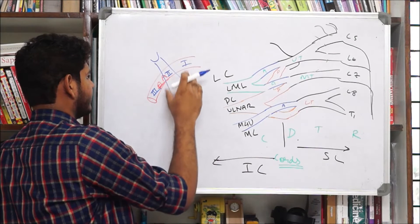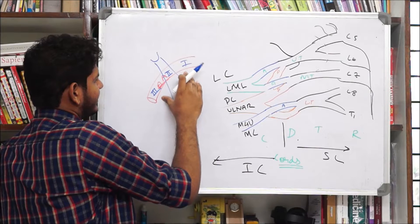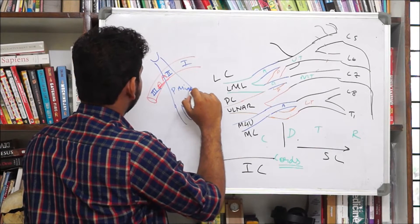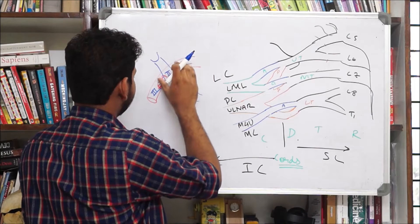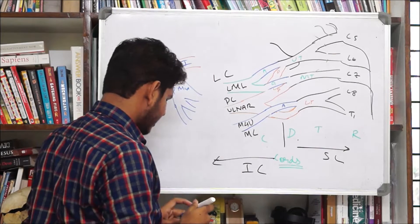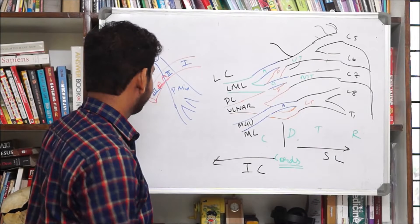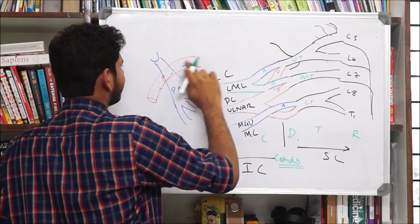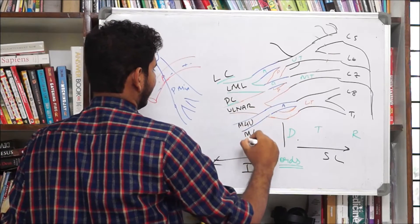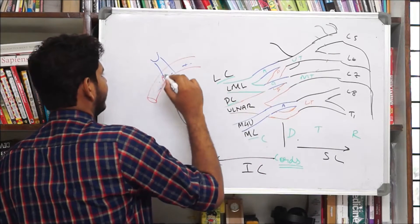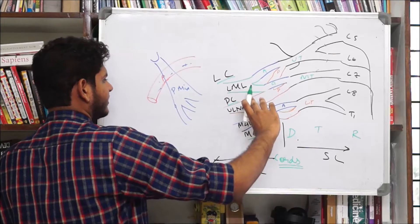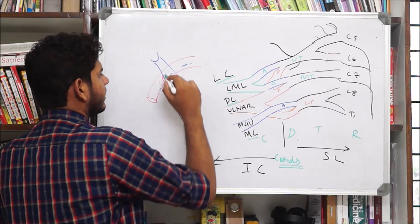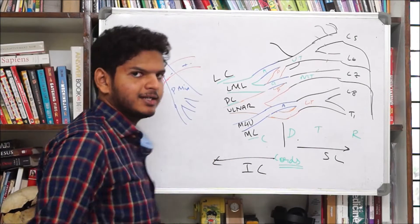It is inserted into the coracoid process here. The part of the axillary artery medial to the pectoralis minor muscle is the first part, beneath is the second, and the last is the third part. The brachial plexus, as we have labeled in this fashion, the lateral, posterior, and medial cord are actually the relations of the cord in the second part of the axillary artery.